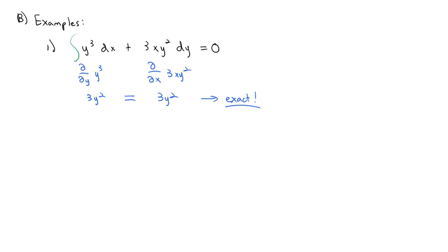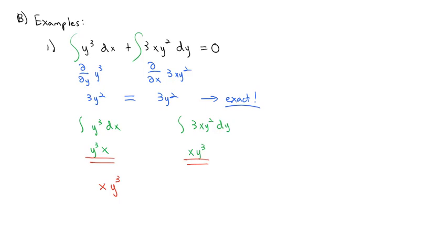Since we have an exact equation, we integrate the dx part and the dy part to solve for our function. Integrating y³ dx gives us xy³. Integrating 3xy² dy also gives us xy³. For our final answer, we take the pieces from the first integral and add any missing pieces from the second integral. Putting things together, we get xy³ equals a constant. The second integral gives the same thing, so there's nothing new to add. That is the solution to the differential equation.